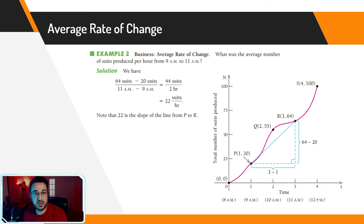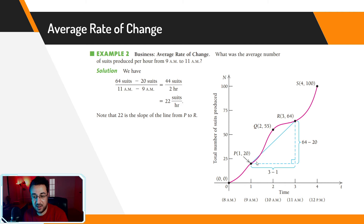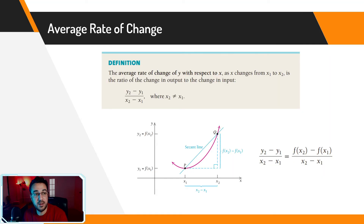That is the average rate of change: the change here is suit production, and the rate is how many suits are produced per hour. The number of suits produced is changing as time moves forward. If you draw a straight line between the point at 9 a.m. and the point at 11 a.m. and calculate the slope of that line, it will give you the average rate of change — 22 suits per hour.